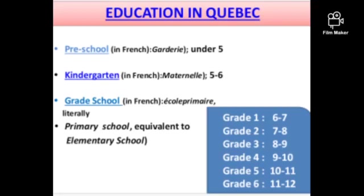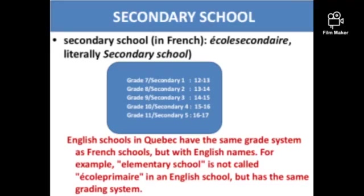In Quebec, the education system includes preschool for students under five, kindergarten for ages five to six, and grade school (primary, equivalent to elementary) covering grades one to six. Secondary school begins at grade seven (called Secondary 1, ages twelve to thirteen) and continues through grade eleven. English schools in Quebec use the same grade system as French schools but with English names, maintaining the same grading structure.